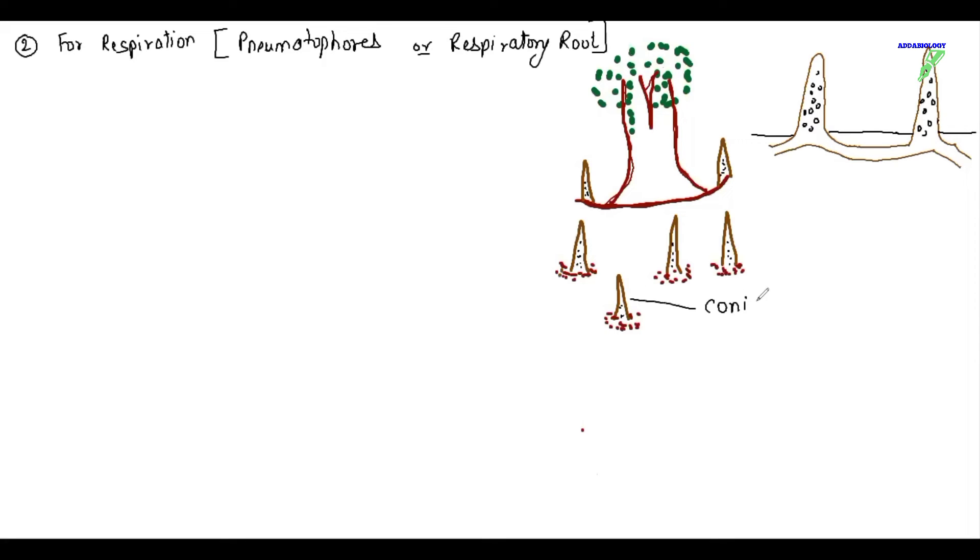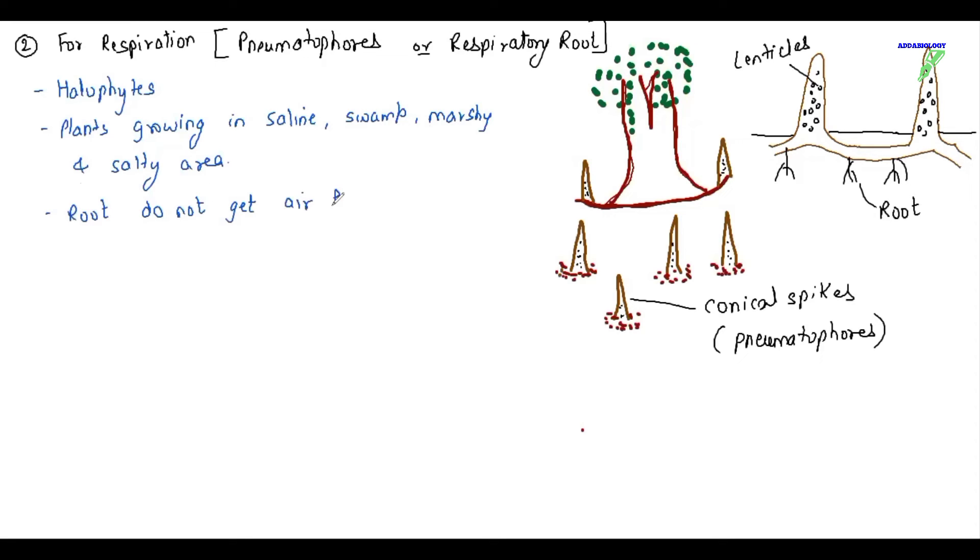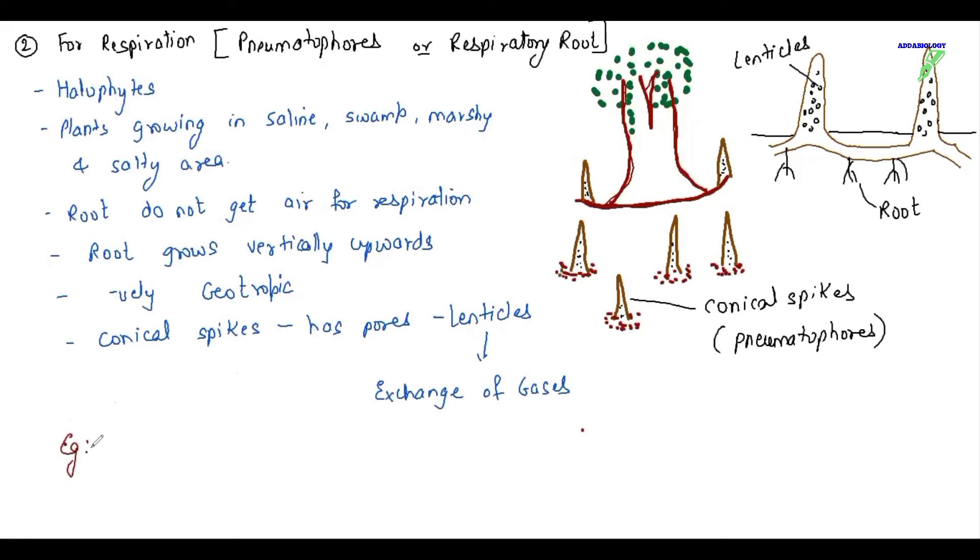It is seen only in marshy areas. Whenever we talk about pneumatophores, we have examples like Rhizophora, Sonneratia, Avicennia. So let's see halophytes. Plants growing in saline, swamp, marshy area, and salty area. Roots do not get air for respiration. As a result, they go against the gravity and they come vertically upward, means they are negatively geotropic. Conical spikes are seen and it has pores called lenticels, and these lenticels are meant for exchange of gases. As a result, in salty area these roots can breathe. Example is Rhizophora, Avicennia, Sonneratia, Heretaria.